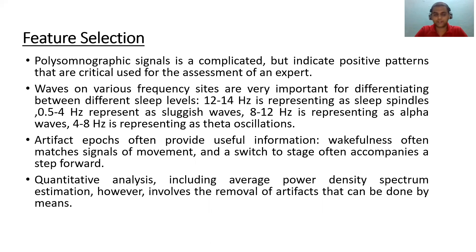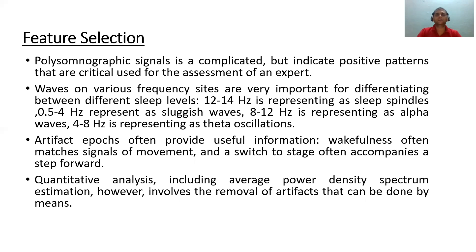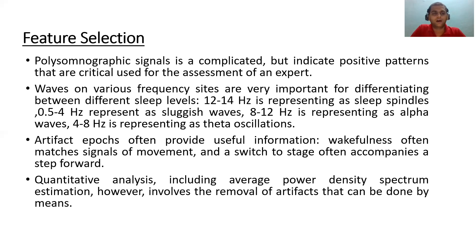Feature extraction is the main part of any deep learning problem. Polysomnographic signals are very complicated, containing around 12 to 15 parameters, but they definitely indicate positive patterns used by experts for assessment of whether a person is suffering from sleep apnea. There are waves in different frequency ranges: 12–14 Hz represented as sleep spindles, 0.5–4 Hz as slow waves, 8–12 Hz as alpha waves, and 4–8 Hz as theta oscillations. Artifact epochs often provide useful wakefulness signals.